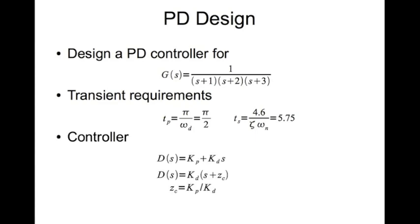The controller is of the form D(s) = kp + kd*s, where the first term is the proportional part and the second is the derivative part. You can also write this as kd*(s + zc), where zc is the location of the zero of the controller, given by kp divided by kd.